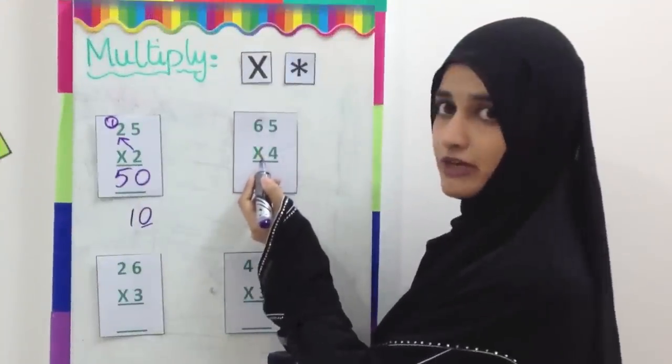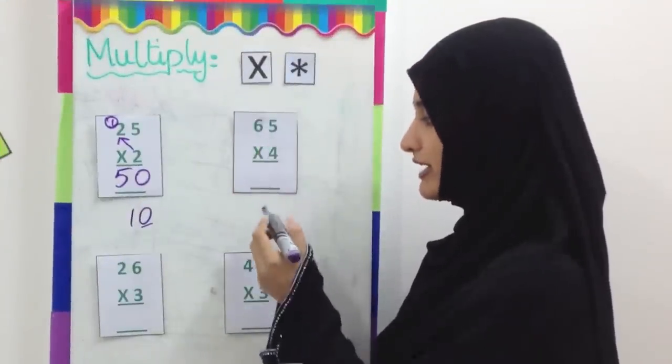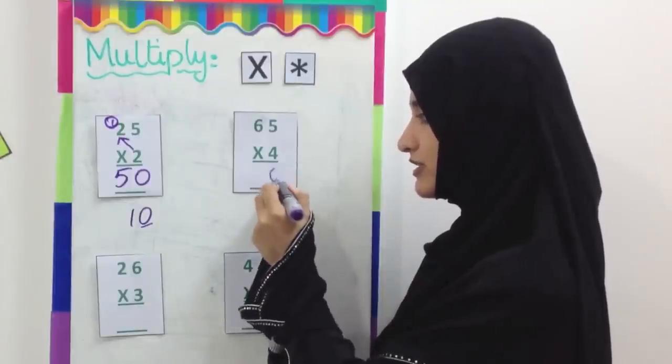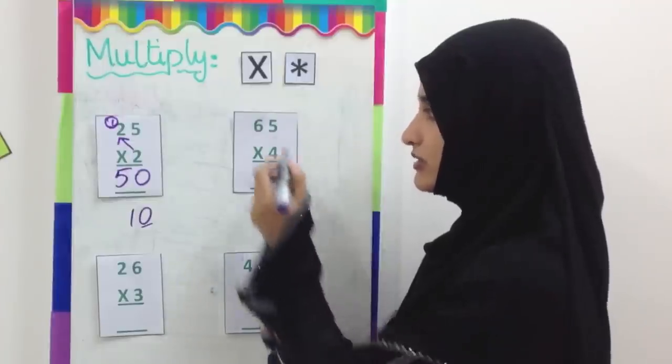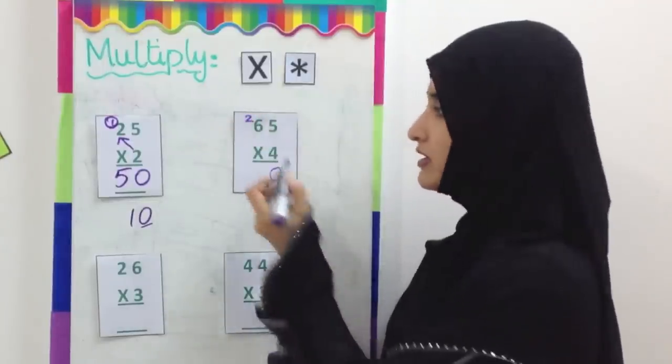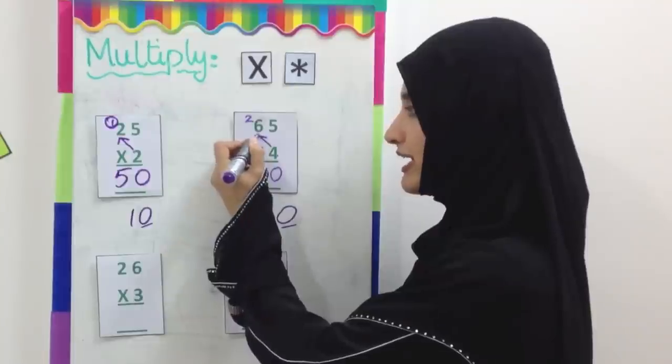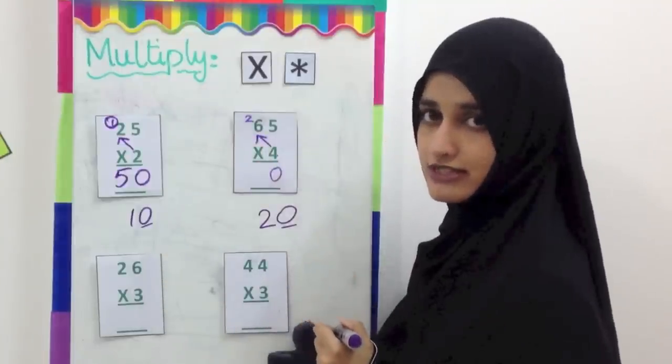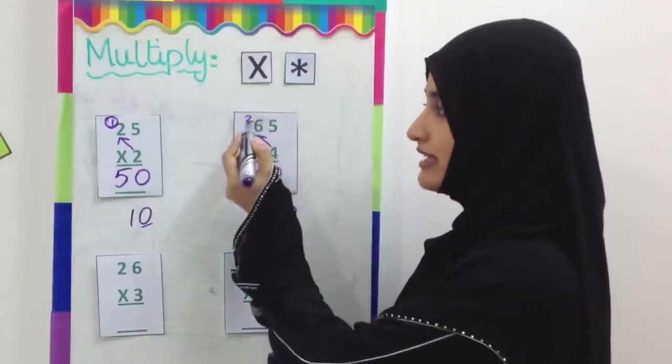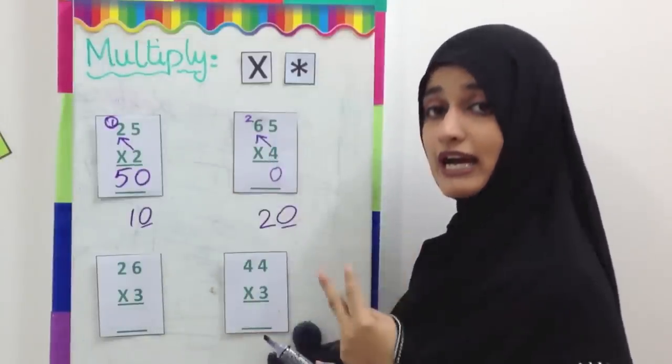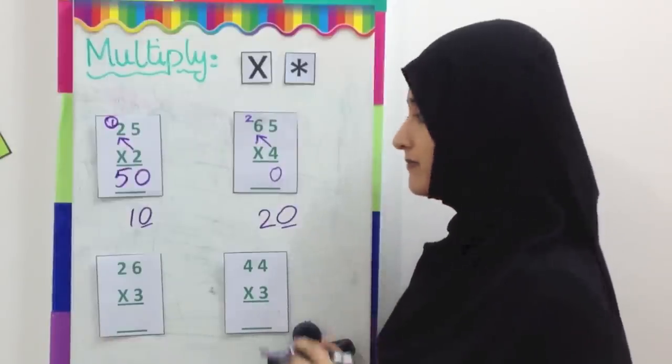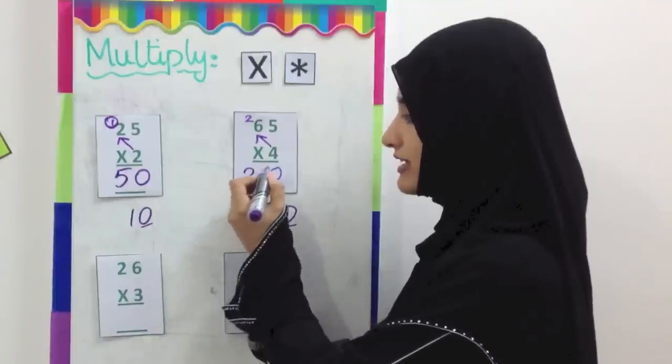65 multiplied by 4. 4 5's are 20. This 0 comes here. This 2 is carried next to the 6. Now we are going to multiply 4 and 6 together. 4 6's are 24. In the 24, we are going to add 2 more. So we have 25, 26. The answer is 260.